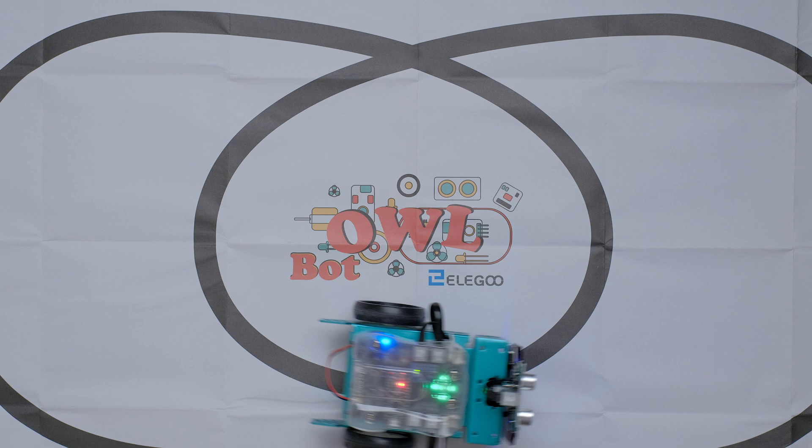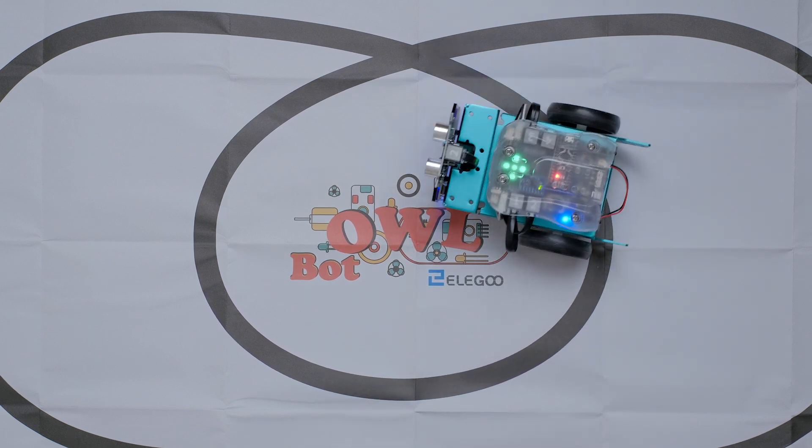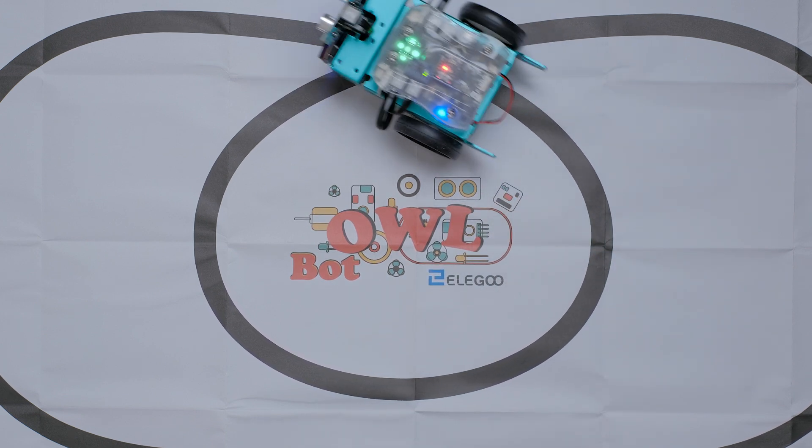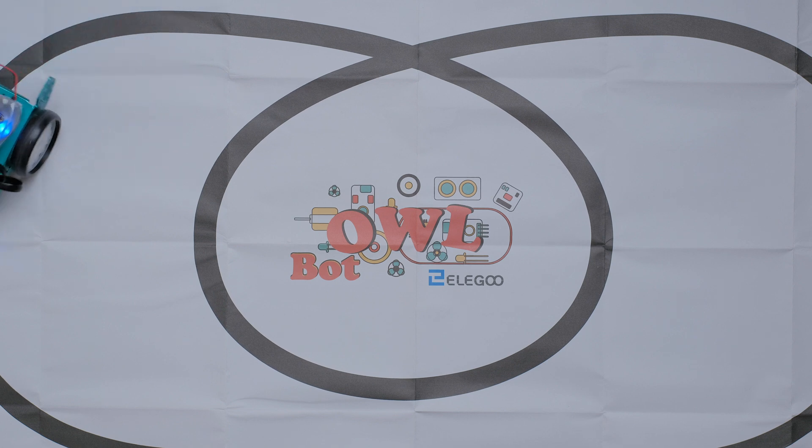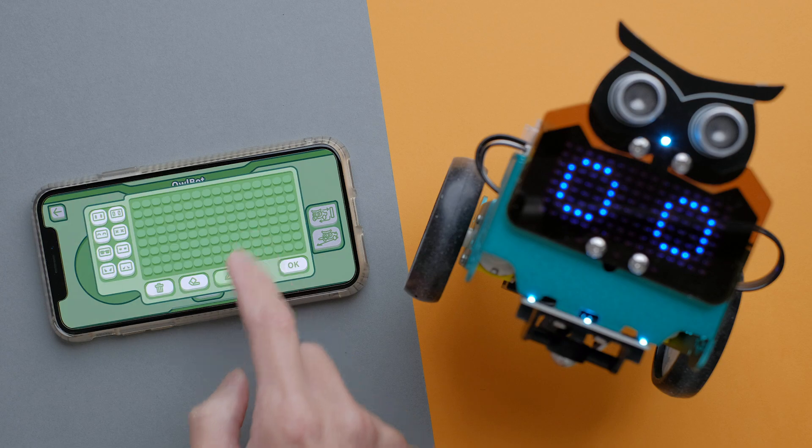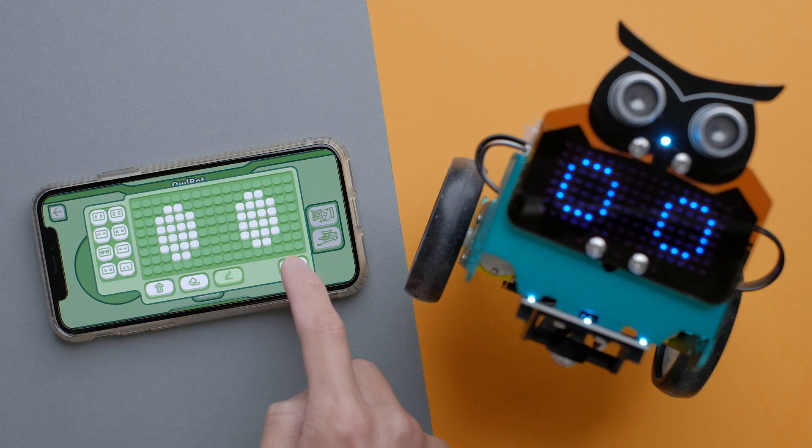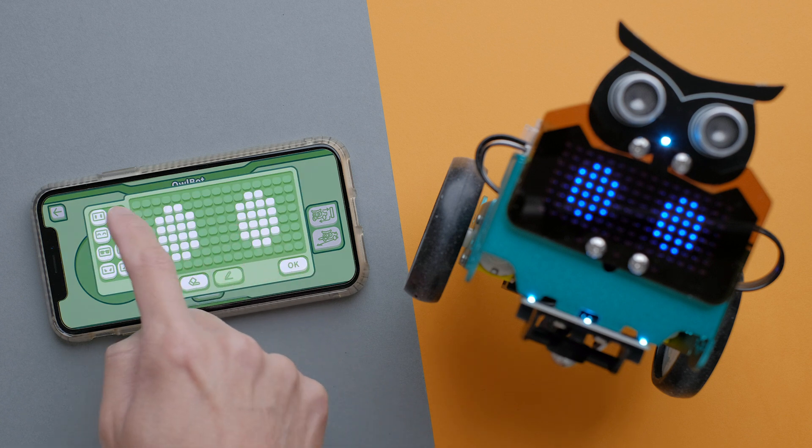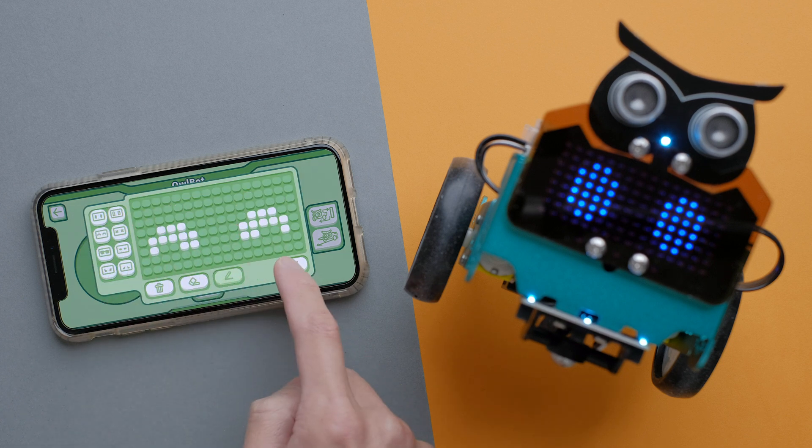By using the line tracking module underneath, the OwlBot can track the black lines on the paper. With the included circuit expression controls, you can select pre-made faces for the LED dot matrix panel, or you can draw your own faces.